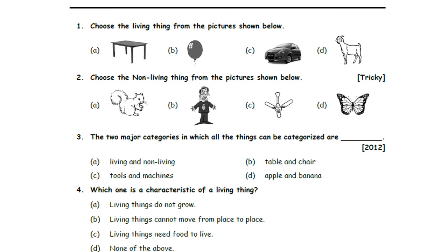First one: choose the living thing from the pictures shown below. Option A: Table. Option B: Balloon. Option C: Car. Option D: Goat. You all know A, B, and C are non-living things. The question is asking to choose the living thing from the pictures shown below. So, Option D, Goat, is the correct answer.